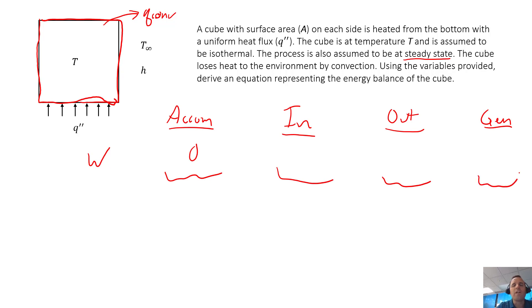How is energy getting into our system? It's coming in by this constant flux on the bottom, so we have this flux q double prime. We want to know that this is a flux and we need to multiply that by the area to get the total rate of energy coming in.